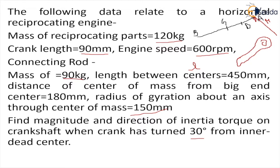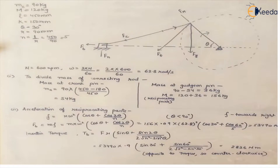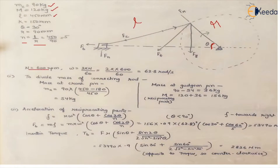We have to find the magnitude and direction of the inertia torque on the crankshaft when the crank has turned 30 degrees from inner dead center, so theta is 30 degrees. We have all the data: mass of connecting rod, mass of reciprocating parts, length l, radius of gyration k, and crank length r. We can find the ratio n = l/r, and calculate omega = 2πN/60.